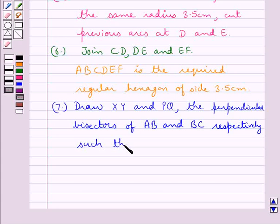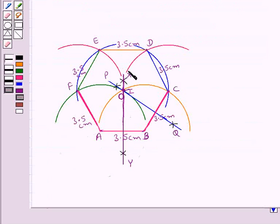PQ the perpendicular bisector of BC, and they both intersect each other at the point I. So we have drawn XY, perpendicular bisector of AB, and PQ, perpendicular bisector of BC, and they both intersect each other at the point I.